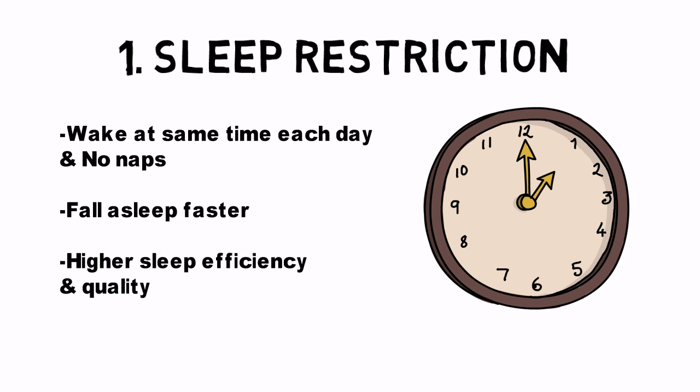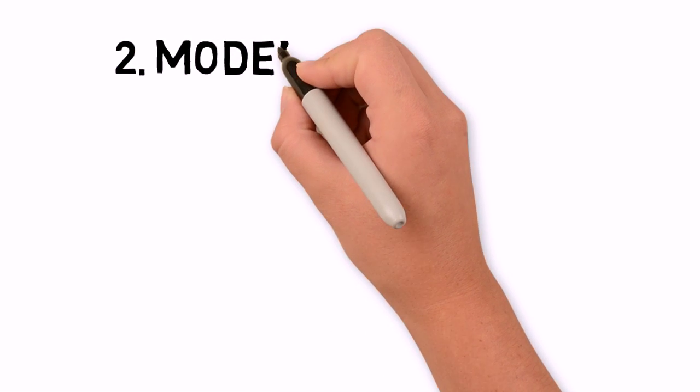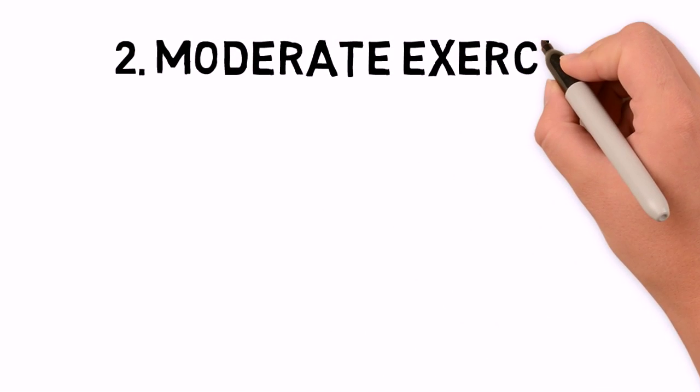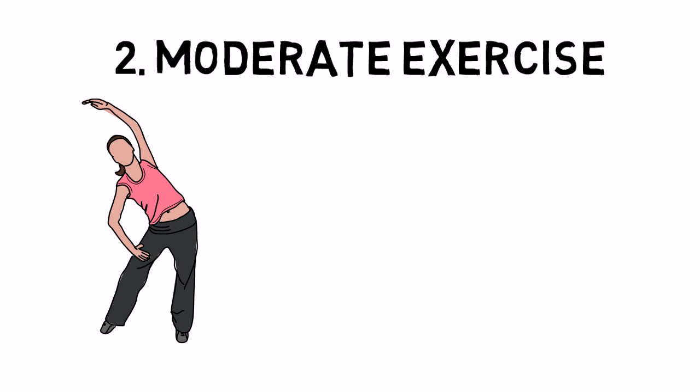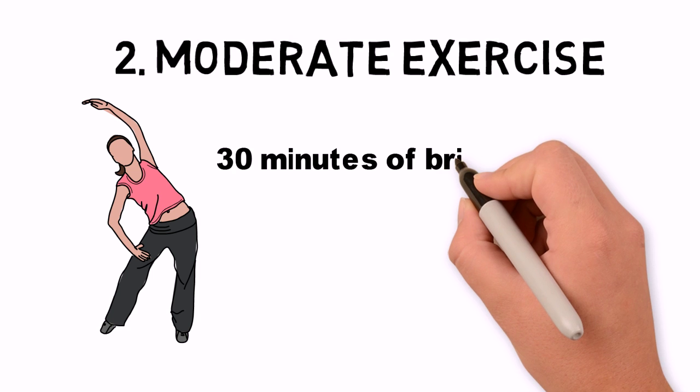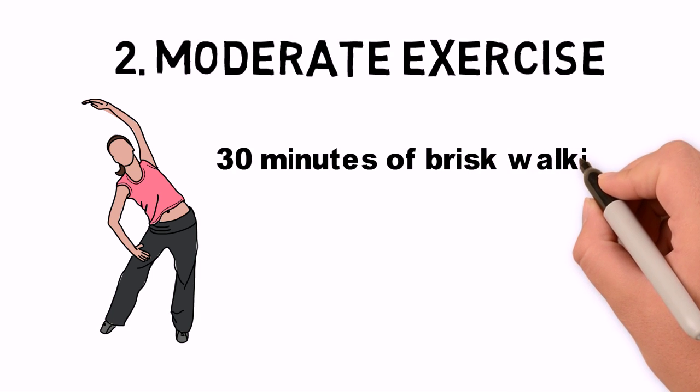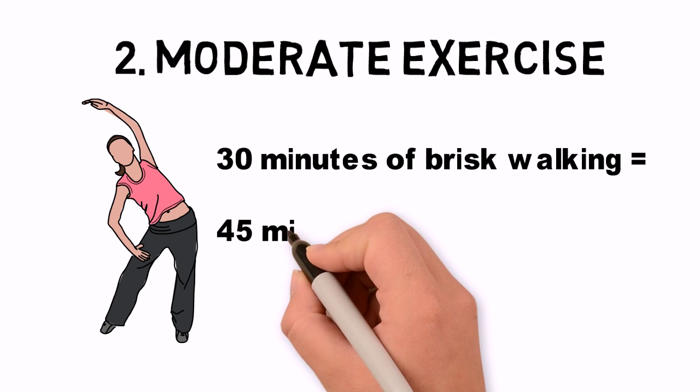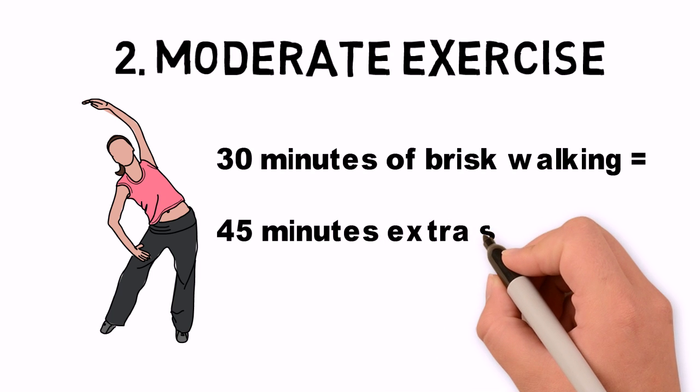Habit two: exercise. Active lifestyles are highly correlated with better sleep. Experiments have found the most success with light aerobic exercise, meaning brisk walking for at least 30 minutes per day, resulting in an extra 45 minutes to an hour of sleep per night.